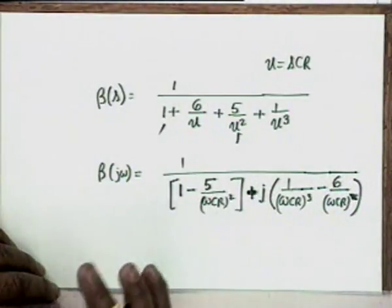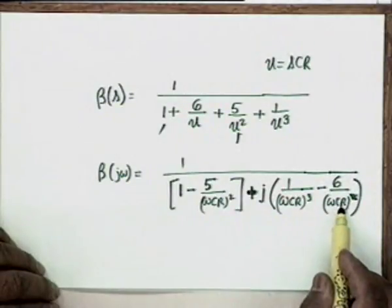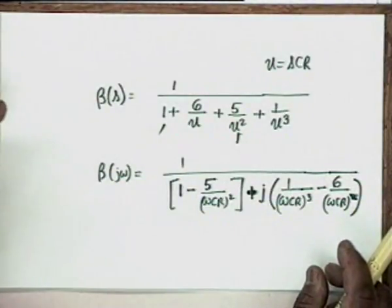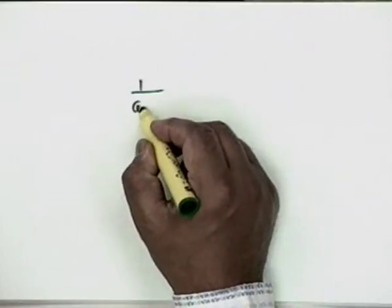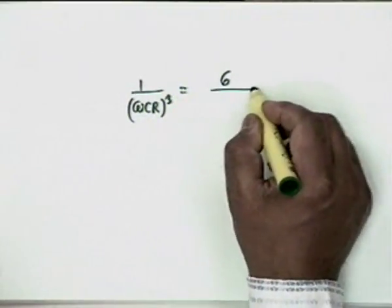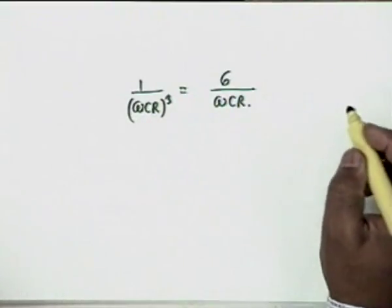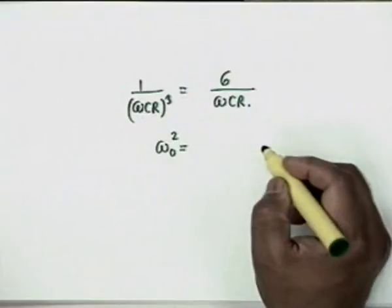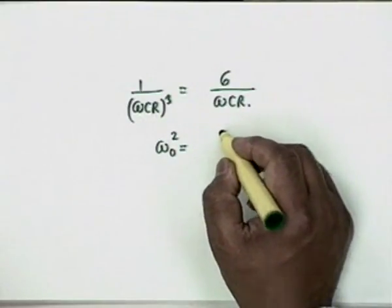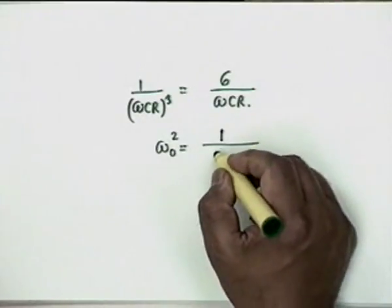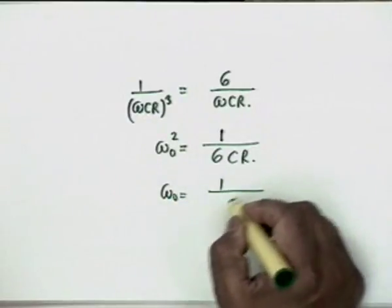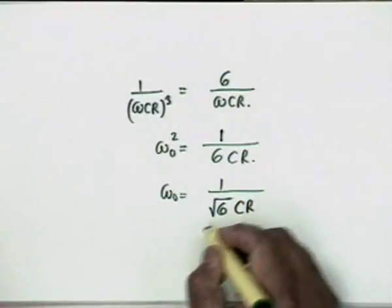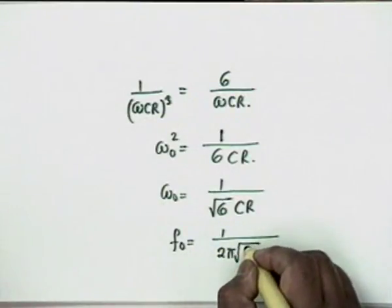For a 180° phase shift, the imaginary part must be zero and β must be a real negative quantity. Setting the imaginary term to zero: (1/ωCR)³ = 6/(ωCR), which gives ω₀² = 1/(6C²R²), or ω₀ = 1/(√6 · CR). Therefore, the frequency of oscillation is F₀ = 1/(2π√6 · CR).